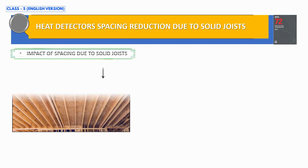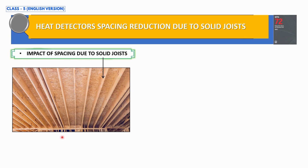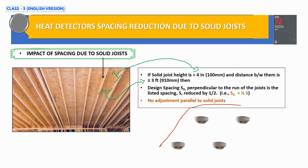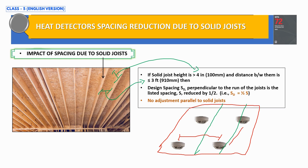Coming back to today's topic: the impact of heat detector spacing due to solid joist construction. As per NFPA 72, the design spacing of heat detectors is calculated using a specific formula if the solid joist height is more than 4 inches and the distance between solid joists is less than or equal to 3 feet. We need to know the distance between heat detectors both horizontally and parallel to the solid joists.